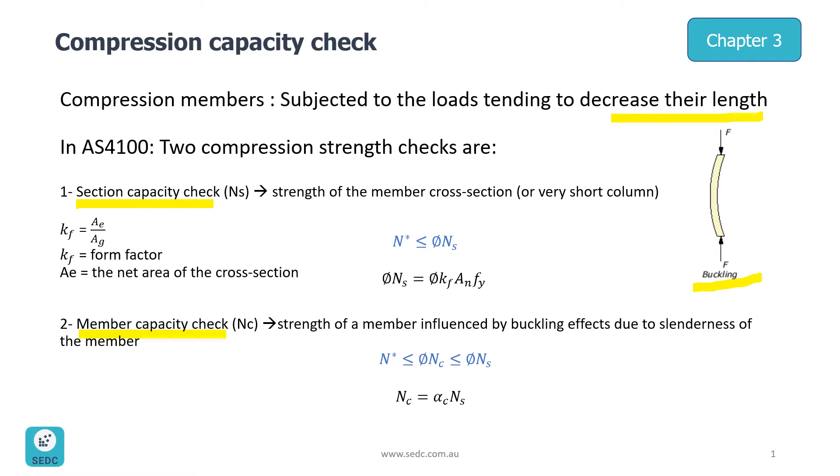Section capacity is defined by NS which is the strength of the member cross section and is usually the governing formula for very short columns. The governing formula here is NS star has to be less than or equal to Phi NS.